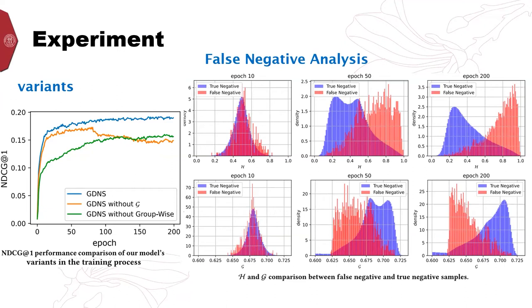Moreover, in the right figure, we also investigate whether the gain-aware negative sampler can indeed distinguish the false negative samples and further identify true negative instances. In the experiment, we randomly select a positive item of each user as the negative to simulate the false negative samples in the training stage, and we track GDNS on H and G during training to analyze how those false negative samples change.